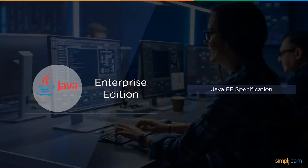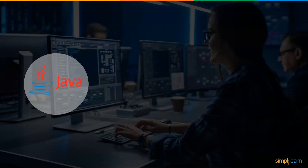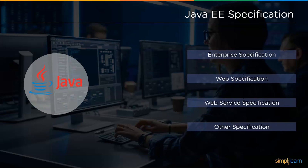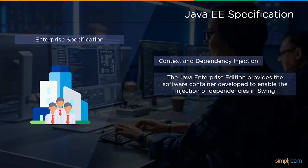Moving ahead, we will understand the Java Enterprise specifications. There are four major specification categories used by enterprise developers: enterprise specification, web specification, web service specification, and other miscellaneous enterprise specifications. In enterprise specifications, the first one is Context and Dependency Injection, which provides a container to inject dependencies.